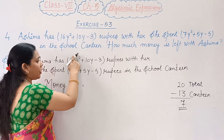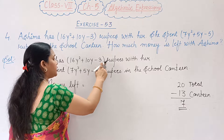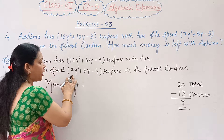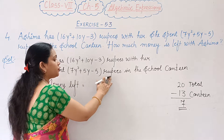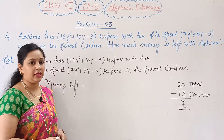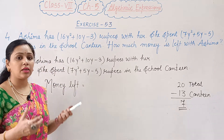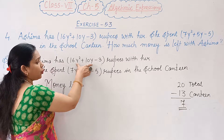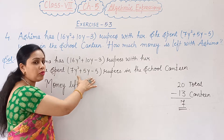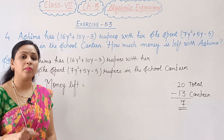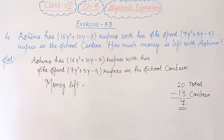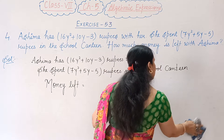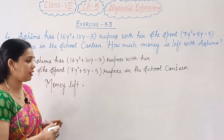Ashima has 16y squared plus 10y minus 3 rupees with her. She spent 7y squared plus 5y minus 5 rupees in the school canteen. Now we have to find how much amount is left. We will subtract — we will minus the total amount spent from the total amount she had.